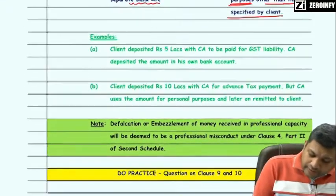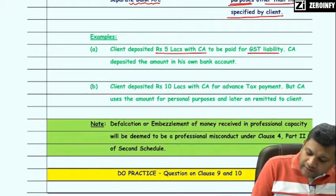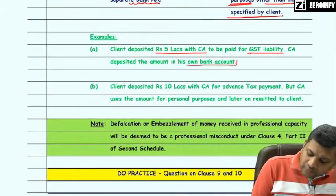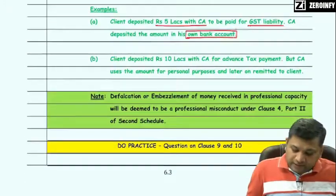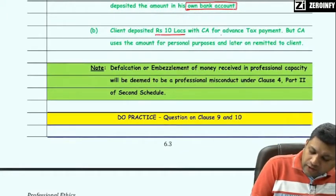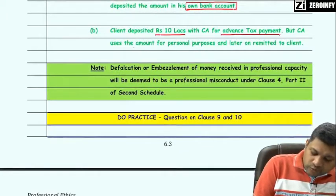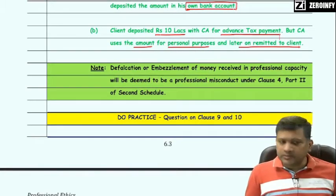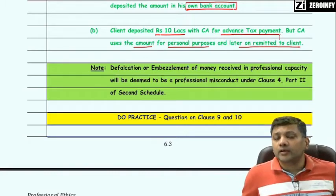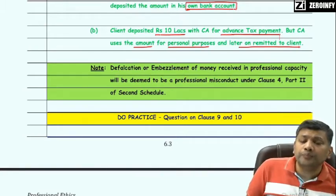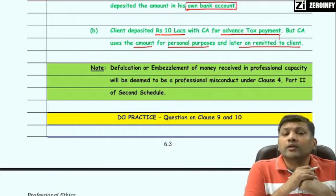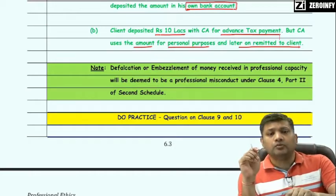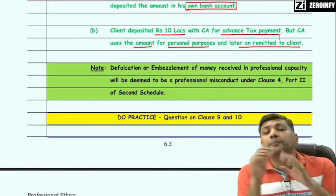Examples: Client deposited Rs. 5 lakh with a CA to be paid for GST liability; however, the CA deposited the amount in his own bank account, mixing the client's money with his own. Second example: client deposited Rs. 10 lakh with CA for advance tax payment, but the CA uses the money for personal purposes and later remits the money to the client. It does not matter that the client money was eventually remitted — the requirement is to deposit in a separate bank account or use for the purpose specified.